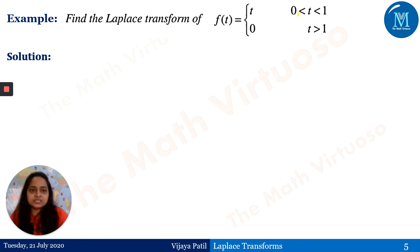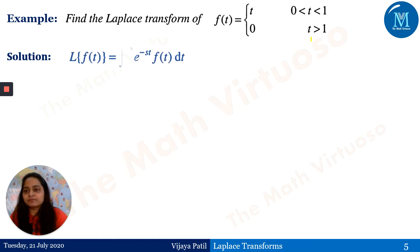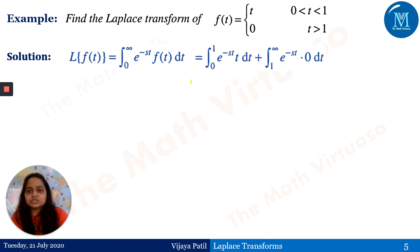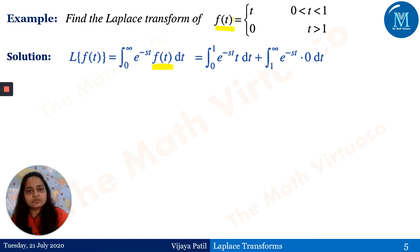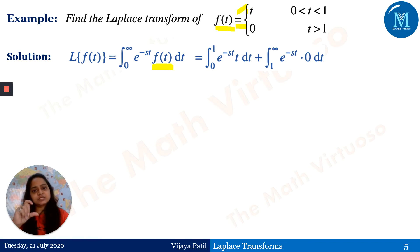f(t) = t for 0 < t < 1, and f(t) = 0 for t ≥ 1. By definition, L{f(t)} = ∫₀^∞ e^(−st) f(t) dt. We split this because f(t) is defined in two intervals. The function equals t on [0,1] and zero on [1,∞), so the integral reduces to ∫₀¹ e^(−st) · t dt.